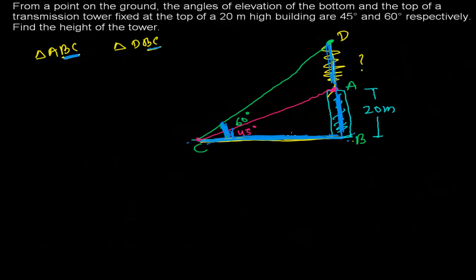Once we get BC, we will use the bigger right-angle triangle DBC to find BD. And once we get BD, we subtract AB from it and we get the height AD of the tower.